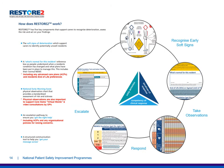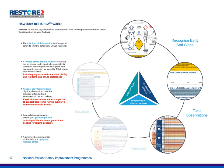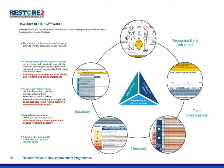Restore2 has five key components that support carers to recognise deterioration, assess the risk and act on the findings. We start by recognising early soft signs. We relate those to what's normal for the resident, taking into account any end of life care or agreed limited treatment plans. Then taking those observations, scoring according to the National Early Warning Score, escalating according to the score, and communicating those concerns using the SBARD escalation tool and action tracker.